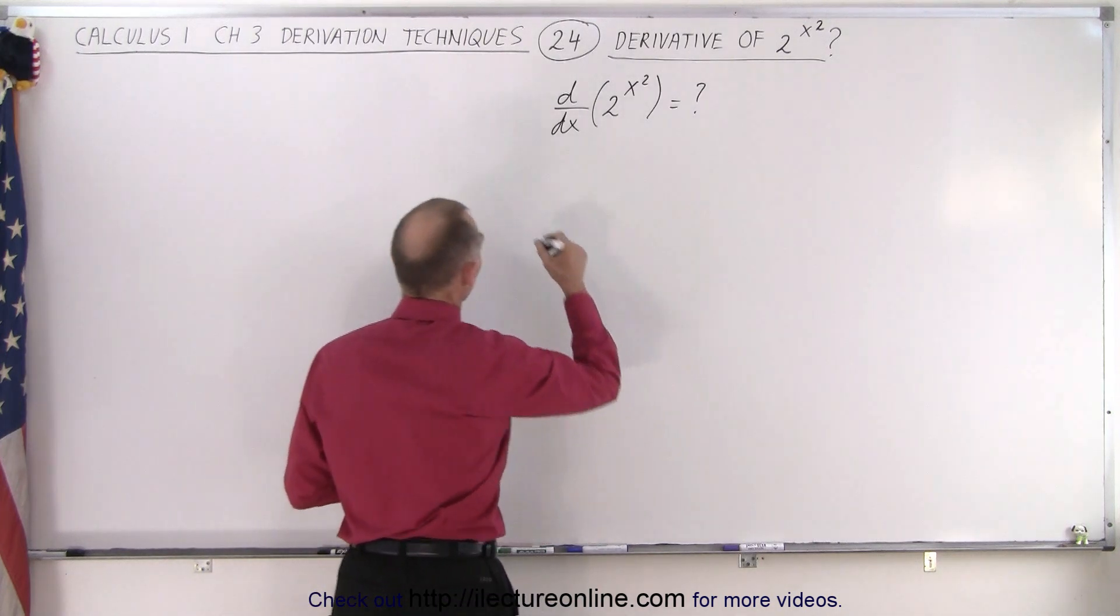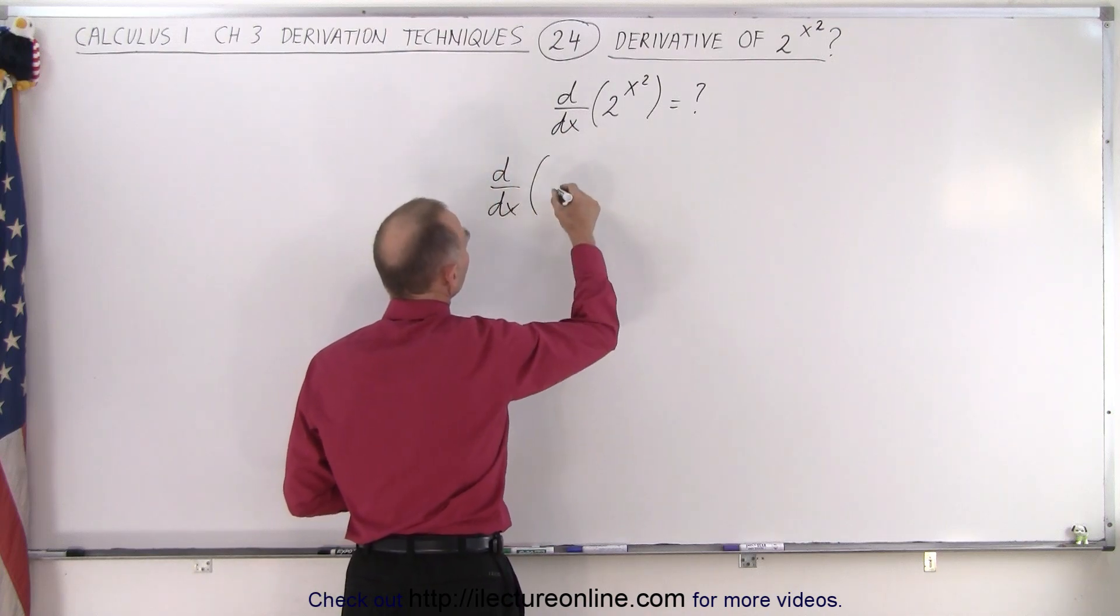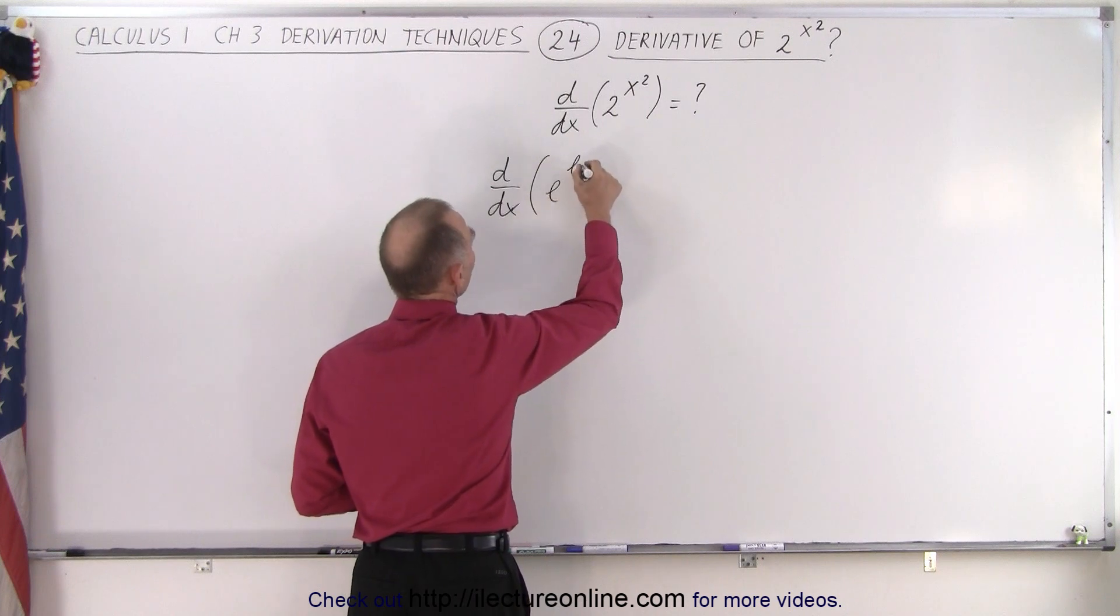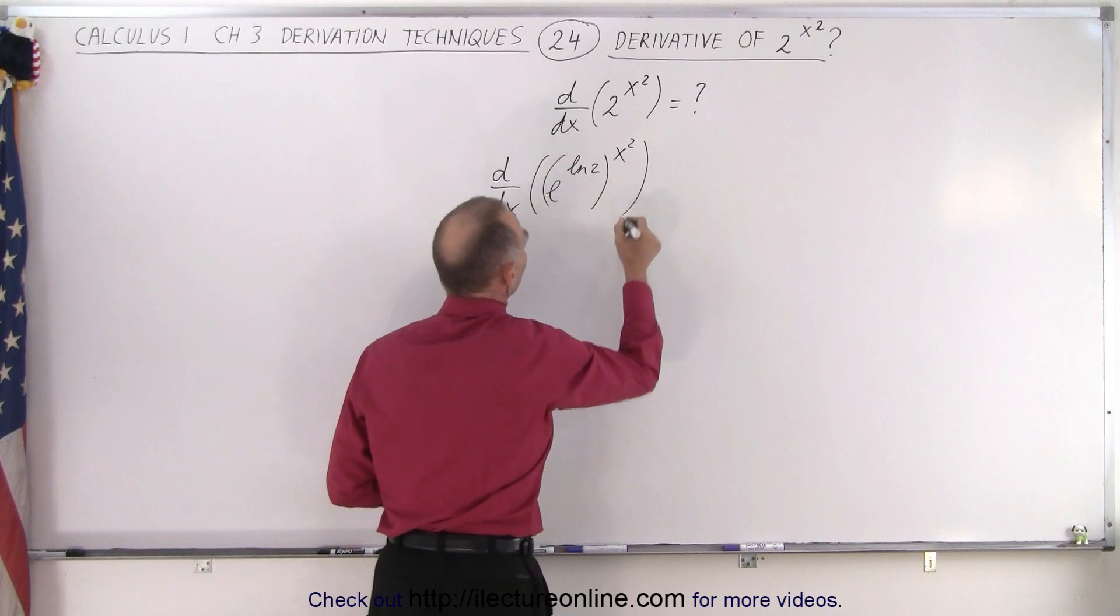We're going to rewrite 2 as follows: take the derivative with respect to x of the quantity e raised to the natural log of 2, to the x squared power.